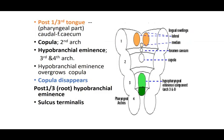Then there is the posterior one-third — the pharyngeal part, caudal to the foramen cecum. The second arch contributes a swelling posterior to the foramen cecum called the copula. At the junction of the third and fourth arches, another swelling forms — the hypobranchial eminence. So three swellings appear on the other arches: the copula from the second arch, and the hypobranchial eminence from the third and fourth.